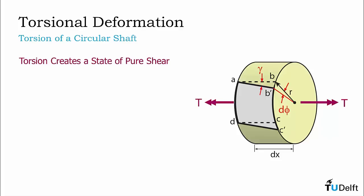Geometrically, we can relate the tangent of this angle gamma to the ratio of the length B, B prime over length AB.